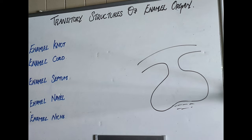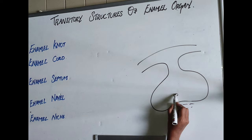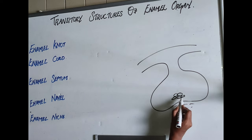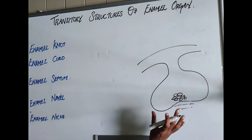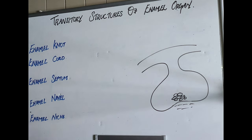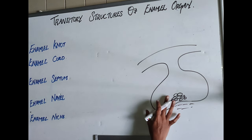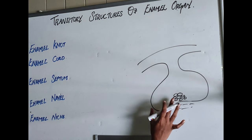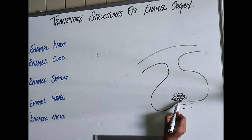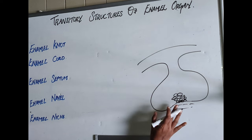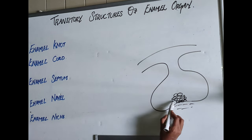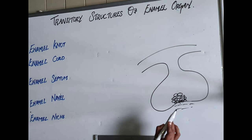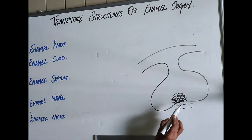The first one is the enamel knot. Enamel knot is a cluster of non-dividing ectodermal cells. These are a group of cells which will not divide and they are ectodermal. This is seen in the area of the enamel organ, in the area of the stellate reticulum. They also partly project into the dental papilla.